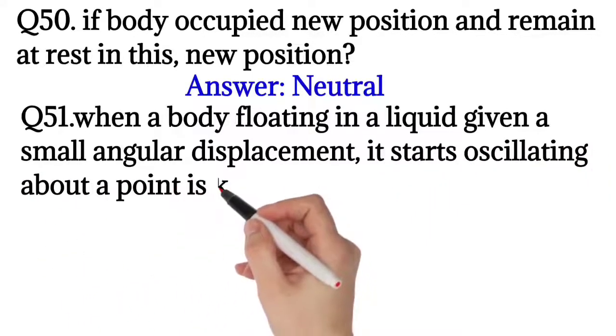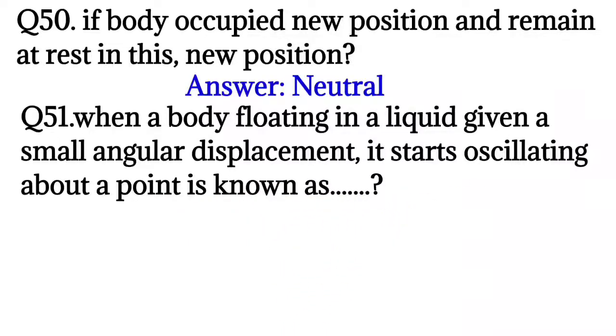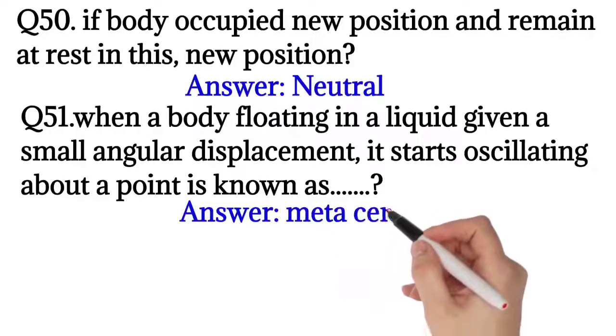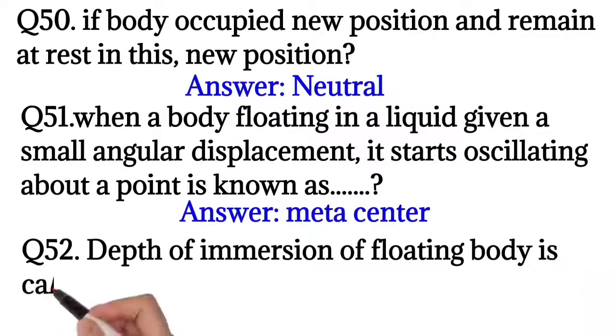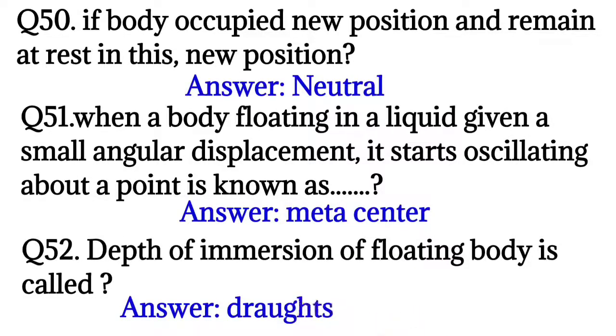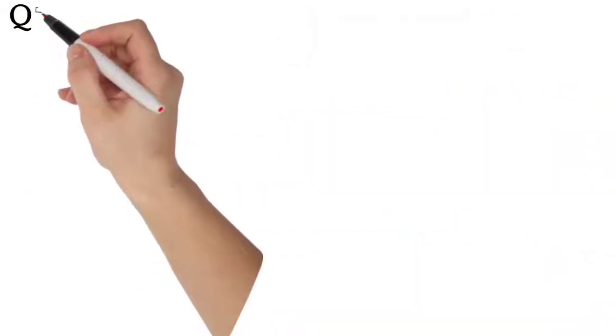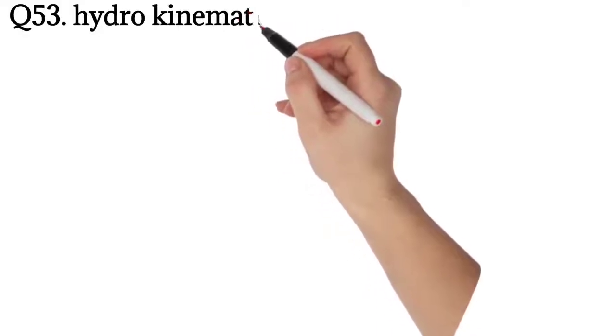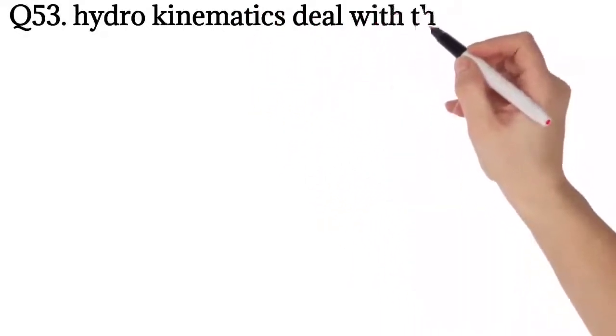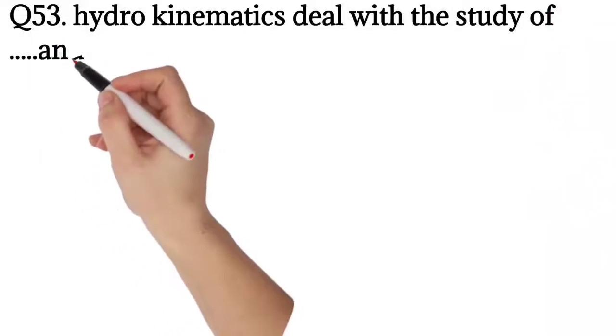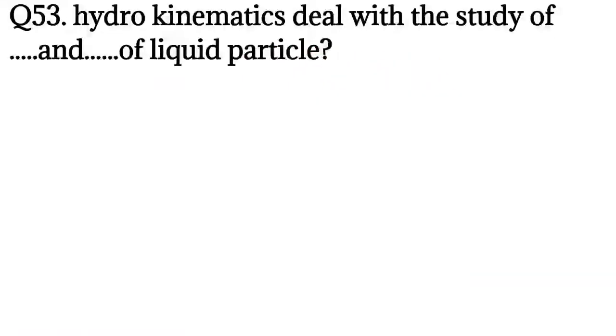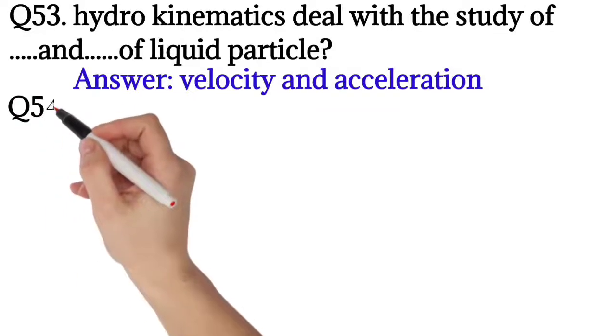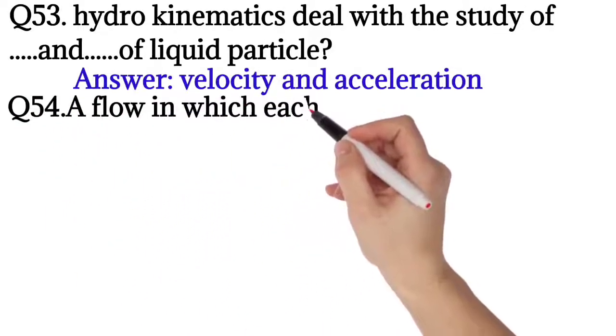Question number 51: When a body floating in a liquid is given a small angular displacement, it starts oscillating about a point known as? The answer is metacenter. Question number 52: Depth of immersion of a floating body is called? The answer is draft.